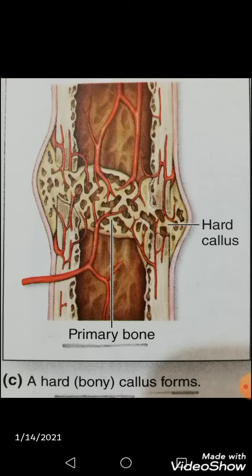In the next picture, the soft fibrocartilaginous procallus is now invaded by regrowing blood vessels from healthier tissue, and osteoblasts become active. Within a week or two, the fibrocartilaginous tissue is gradually replaced by trabeculae of woven bone — primary or non-lamellar bone — forming the hard callus throughout the original area of the fracture.